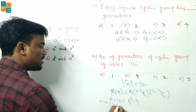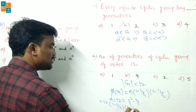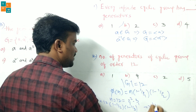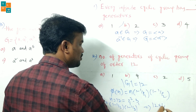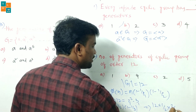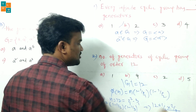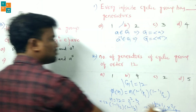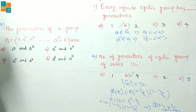Substituting: φ(12) = 12 × (1 − 1/2) × (1 − 1/3) = 12 × 1/2 × 2/3 = 4. So the number of generators is 4, and option B is the correct answer.